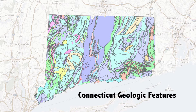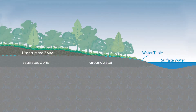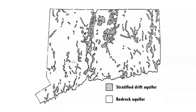Geologic conditions vary across Connecticut. However, there is usually enough groundwater available to supply our water needs. Aquifers are below the earth's surface and are difficult to envision. Connecticut is mainly comprised of two types of aquifers: stratified drift aquifers, which lie in the major river valleys, and bedrock aquifers, which underlie the entire state.